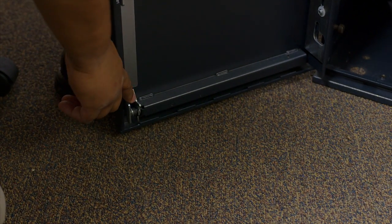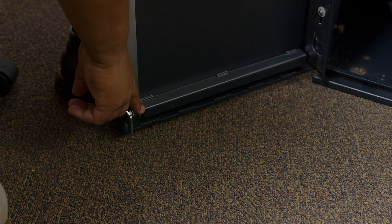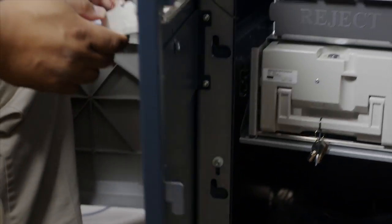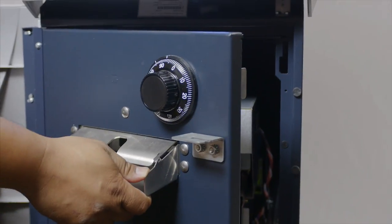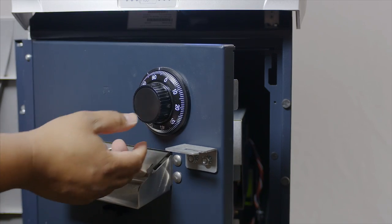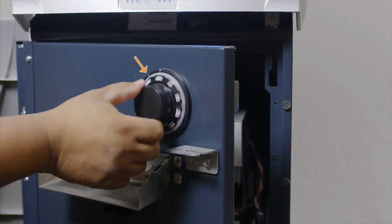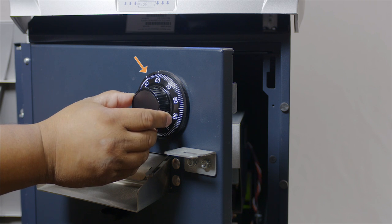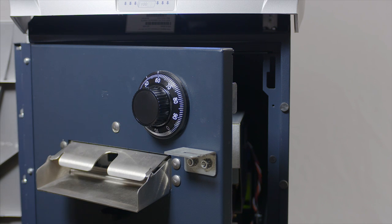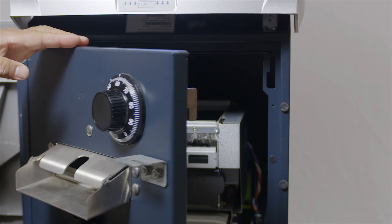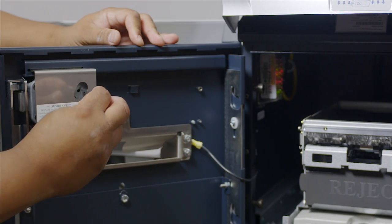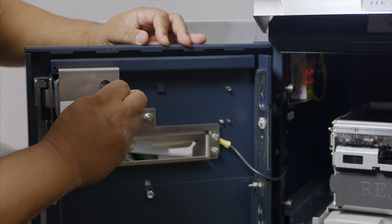Once the door is open, release the locking mechanism and now we're going to put the factory default combination on the change index. Going four times past the change index with 50 and on the fourth time stopping. Insert your change key.